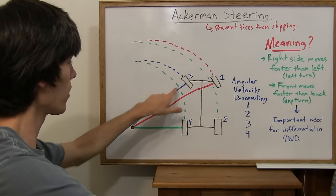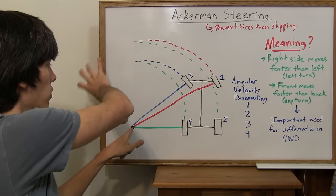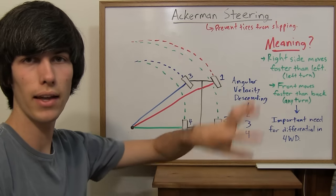With that angle being greater, they can come to a central point, and then all four tires can rotate around one point, which means the tires don't have to slip as they go around.